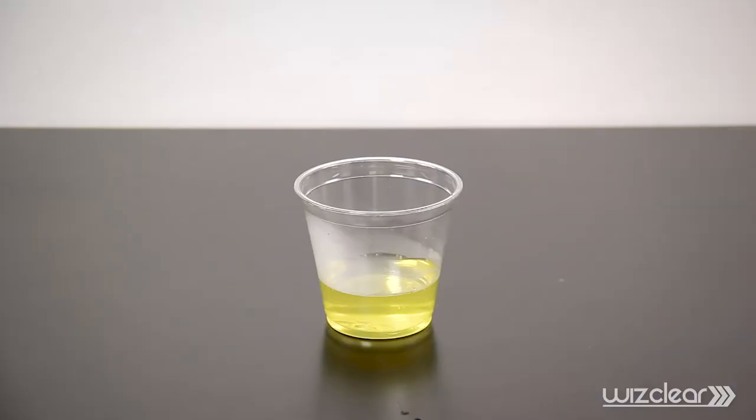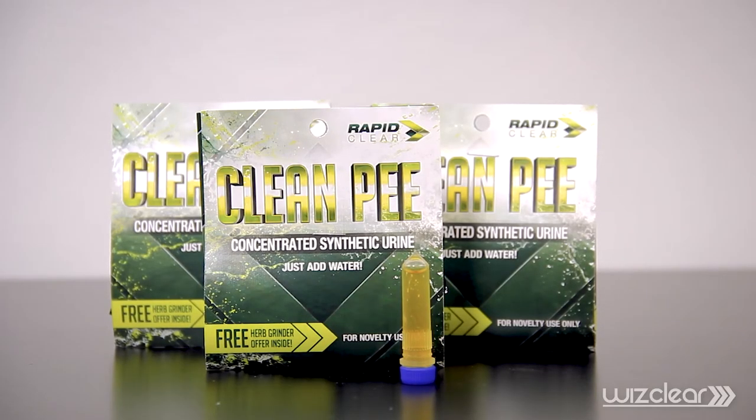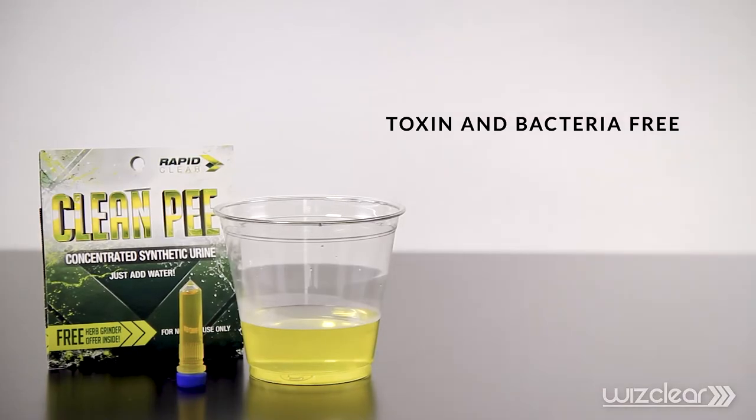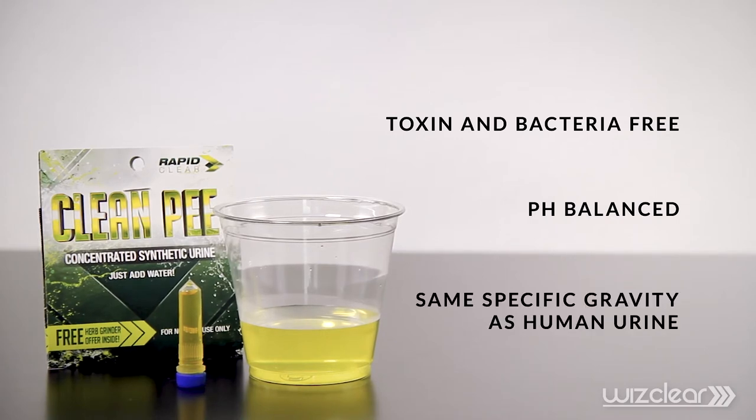Next, we need to prepare the toxin-free synthetic urine sample. We recommend using RapidClear's CleanPee. You may also use a dehydrated or premix synthetic urine like QuickFix. CleanPee is totally toxin and bacteria-free, pH balanced, and contains the same specific gravity as normal human urine. It is essentially urine that has been generated in a lab rather than the human body.